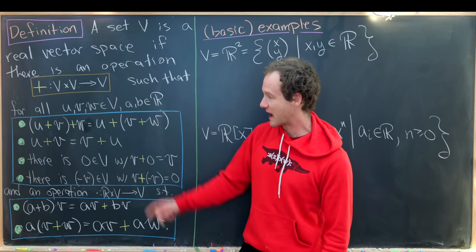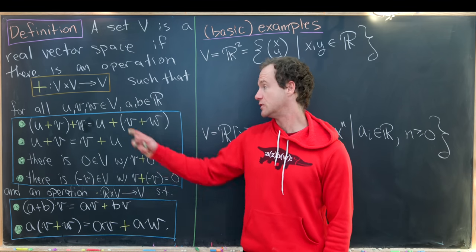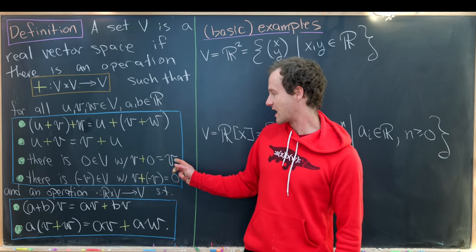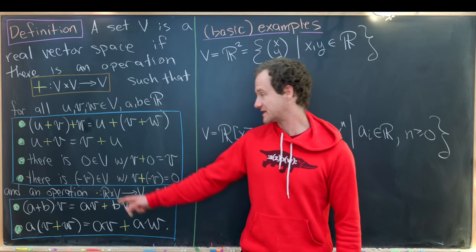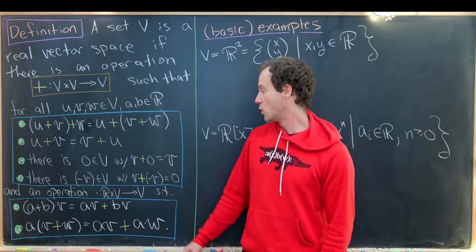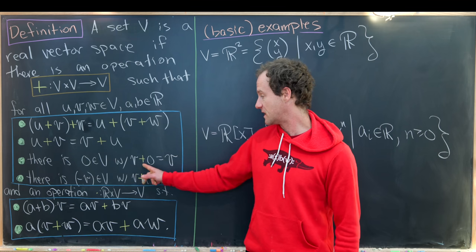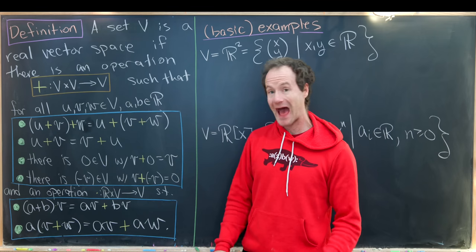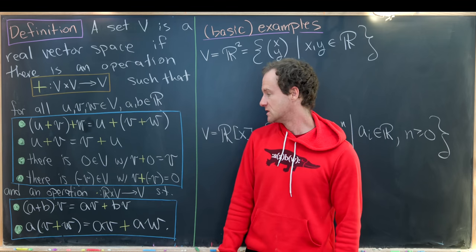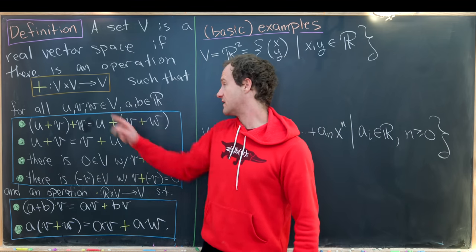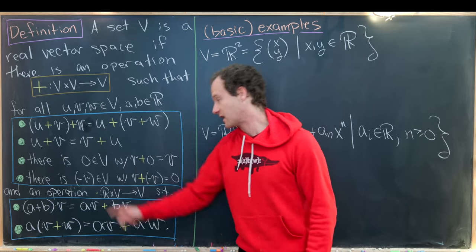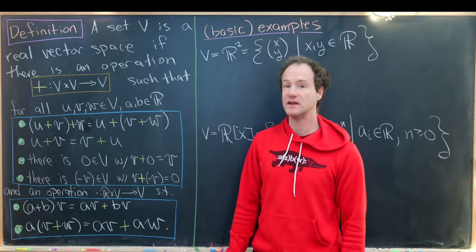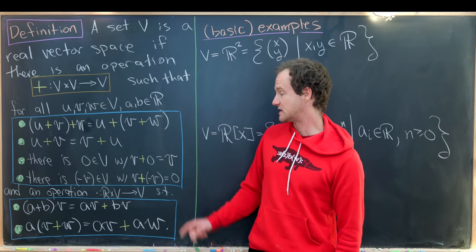Next, we have that vector addition is commutative, so u plus v is the same thing as v plus u. Next, we've got an identity — there's a zero vector, which we'll call zero, with the property that v vector-added to zero equals v. Next, we've got additive inverses, so for every v, there is an element which we'll call minus v, where v plus minus v equals zero, the zero vector.